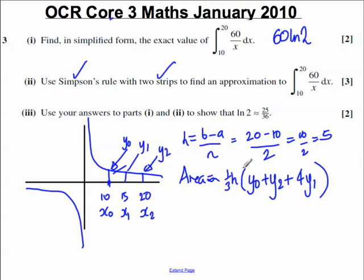OK, let's go ahead and work out y0, y2, and y1. Now, y0 is the value of the function 60 over x when x is equal to 10. So y0 must be 60 over 10, which is 6. y1 must be 60 over 15, which is 4. And y2 must be 60 over 20, which is 3.